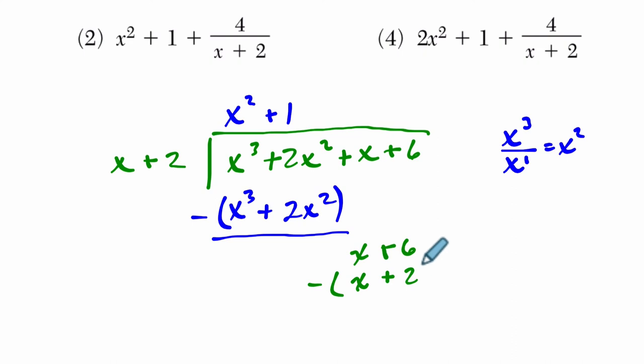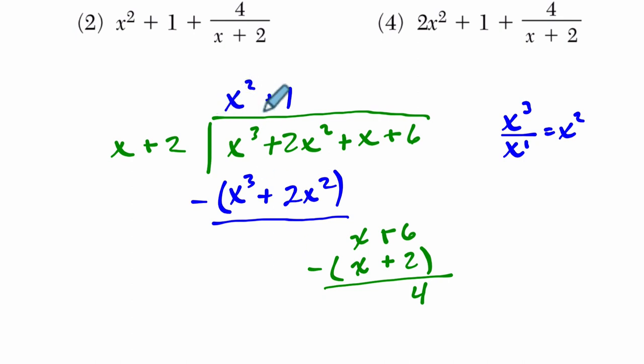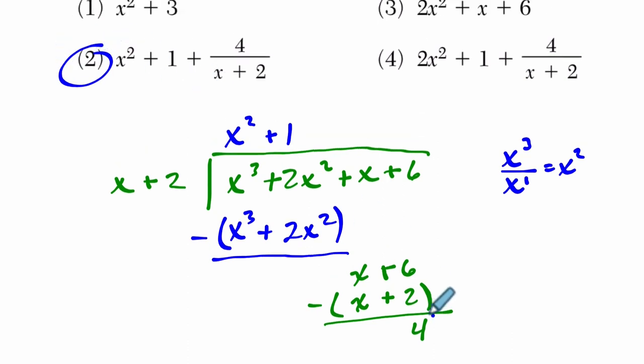x minus itself is 0, and 6 minus 2 is 4. That's our remainder. So our answer would be that this linear function goes into this cubic function x squared plus 1 times, and the only choice that mimics that is choice 2, but it has a remainder of 4 out of your divisor, which they're representing right here. So the answer is choice 2.